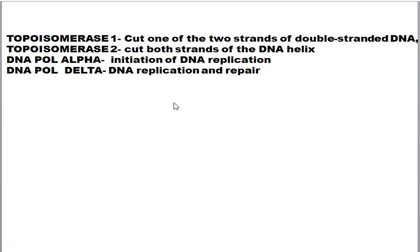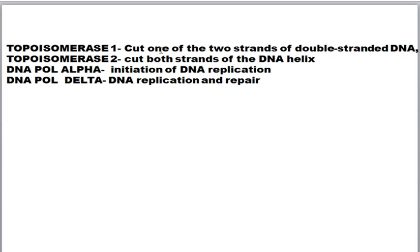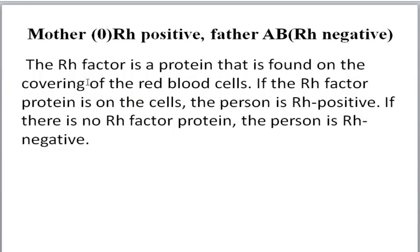Topoisomerase I is an enzyme that cuts one of the two strands of double-stranded DNA, whereas Topoisomerase II cuts both strands of the DNA double helix. DNA polymerase alpha is used for initiation of DNA replication, whereas DNA polymerase delta is used for DNA replication and repair.